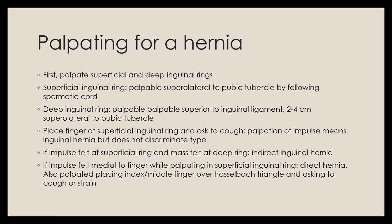To discriminate hernia type: if you feel an impulse at the superficial ring and palpate a mass at the deep ring, this indicates an indirect inguinal hernia. If you occlude the deep ring with your finger and ask the patient to cough and a mass appears medial to the deep ring, that also indicates an indirect inguinal hernia. If the impulse is felt medial to your finger at the superficial ring, that is a direct hernia. Another method: palpate directly over the Hesselbach's triangle and ask the patient to cough or strain.